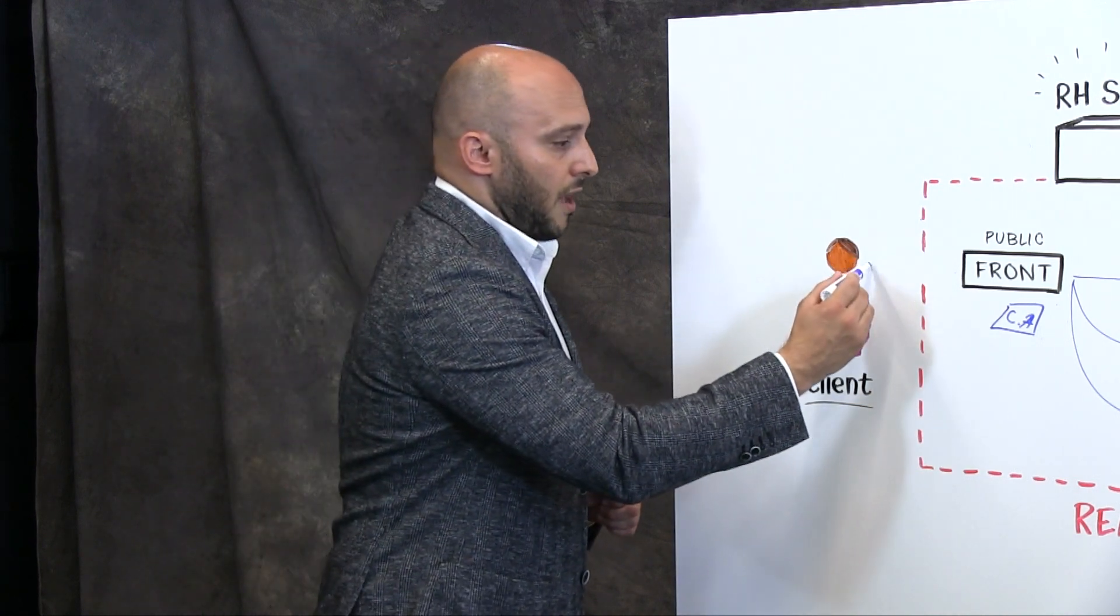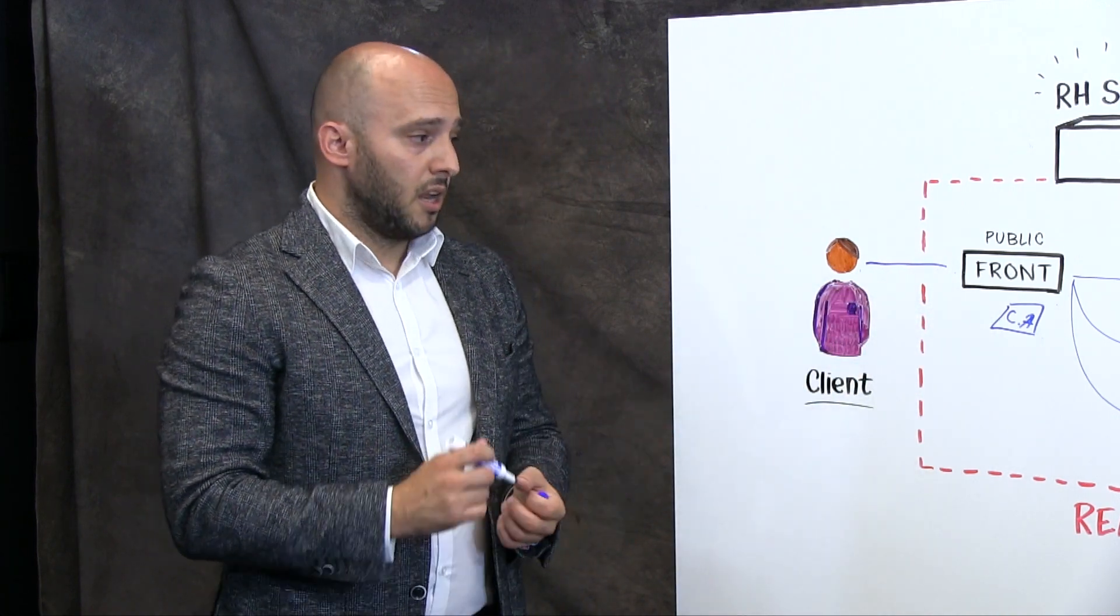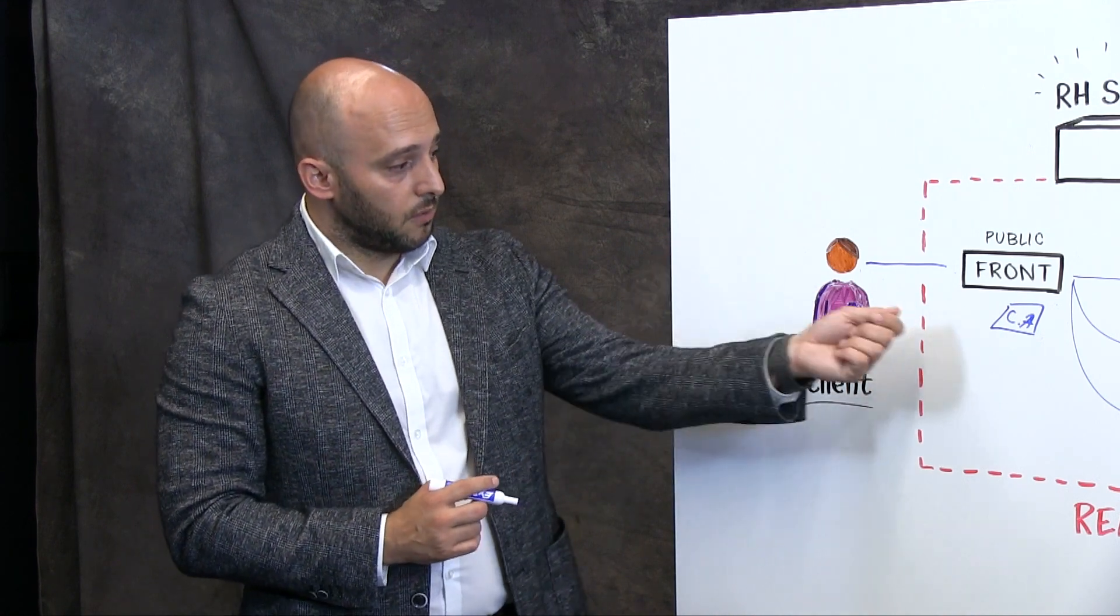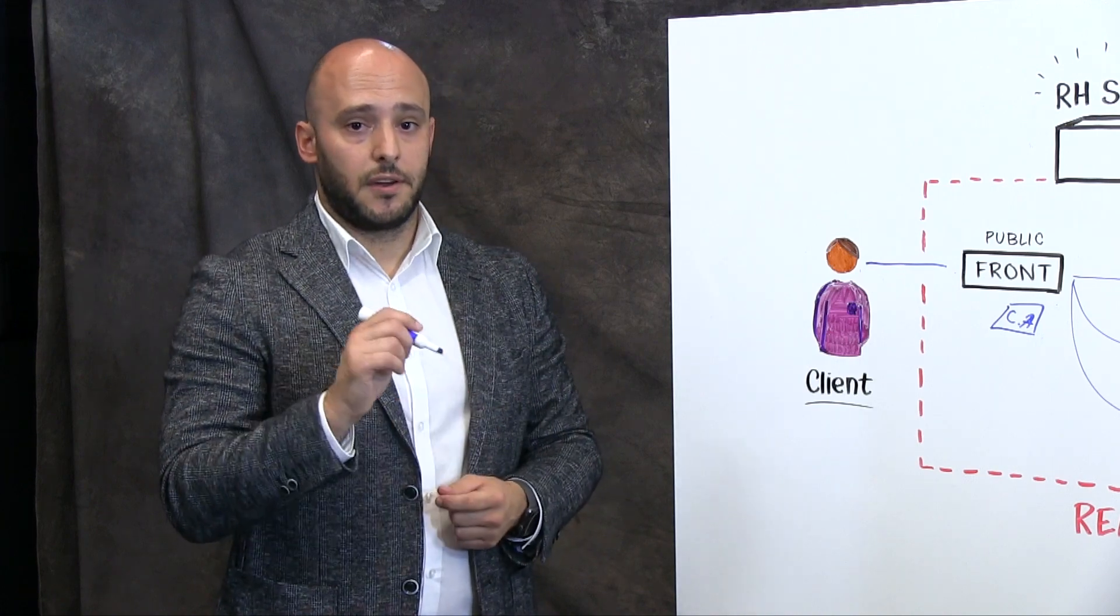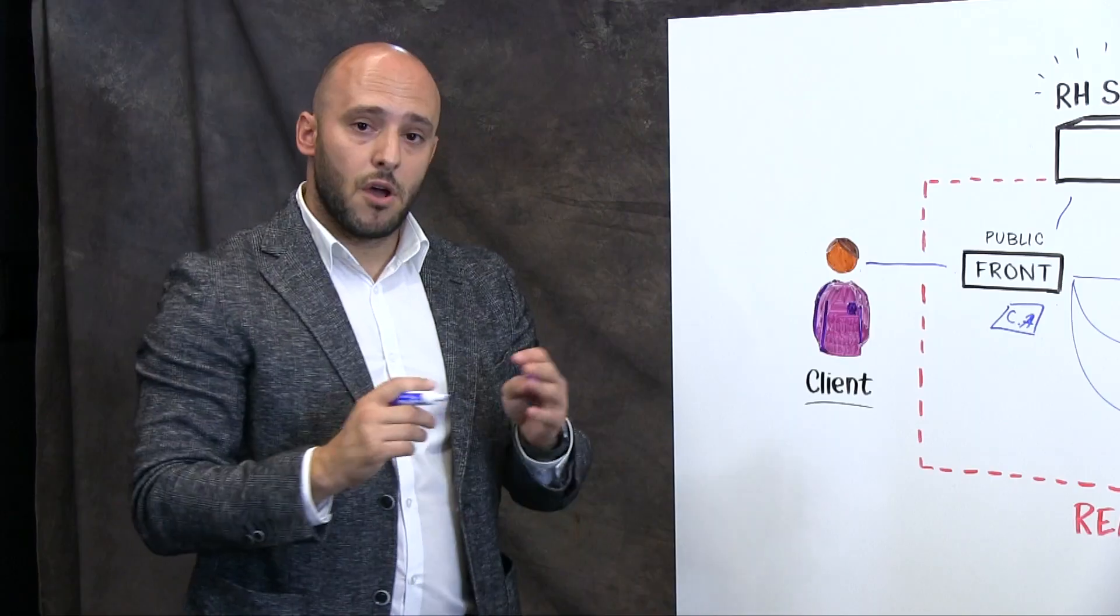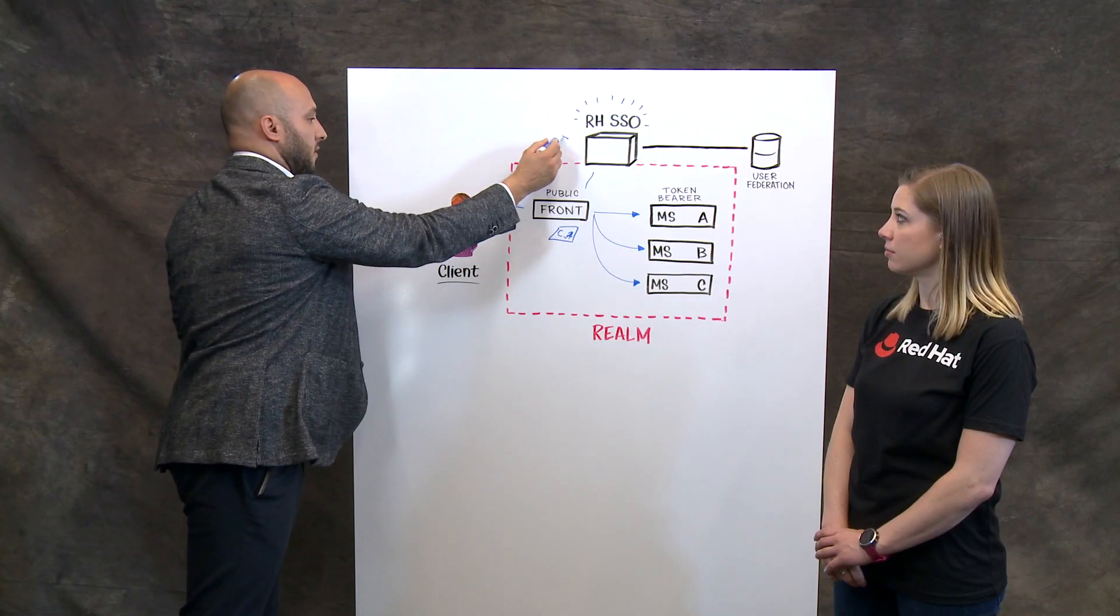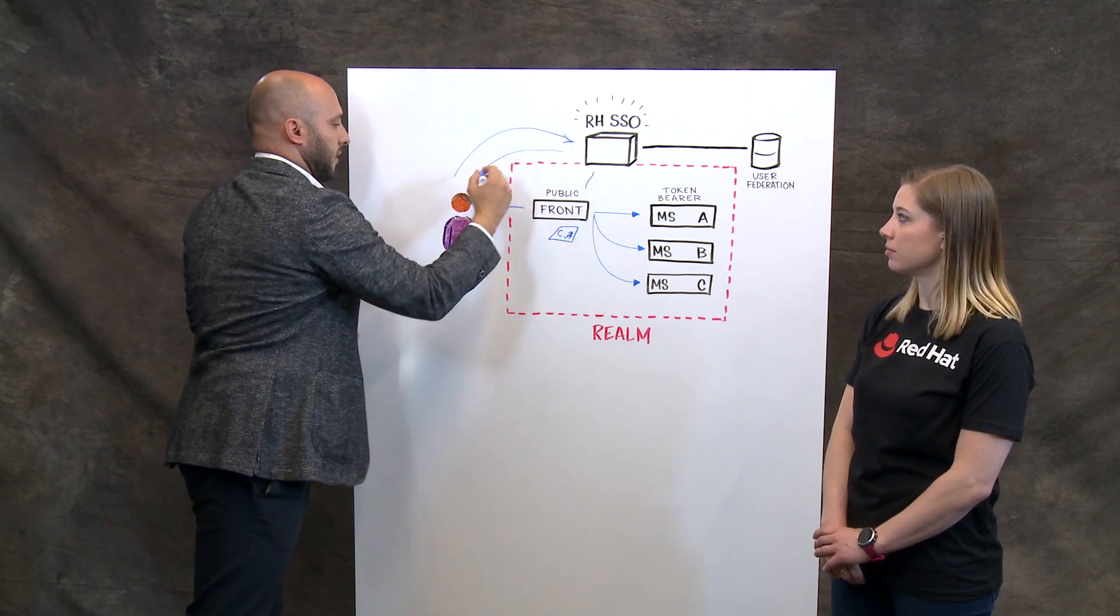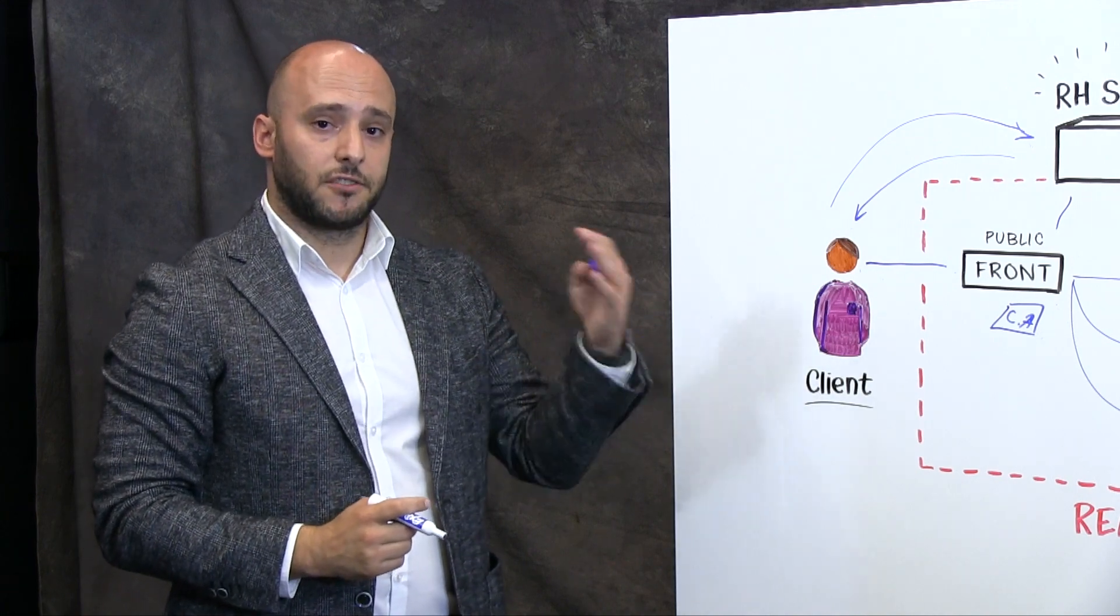So in order to have an authentication flow in public mode, the front-end will validate if the request has credentials in the header. In this case, there is no token or credentials present. That means a redirect will happen between the client and the Red Hat Single Sign-On, which will trigger a claim for an access token.